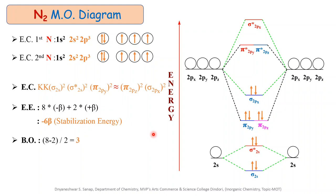The next point is the calculation of bond order. Bond order is calculated using the formula: (number of electrons in bonding molecular orbitals − number of electrons in anti-bonding molecular orbitals) / 2. Putting the values in, we get (8 − 2) / 2 = 3. This means the N2 molecule is formed with 3 bonds between the two nitrogen atoms.